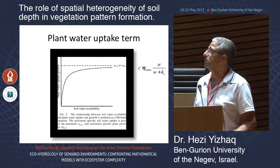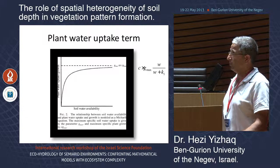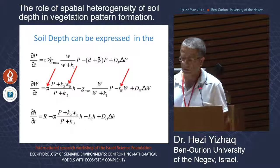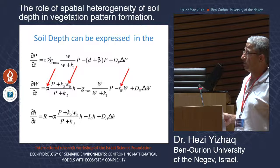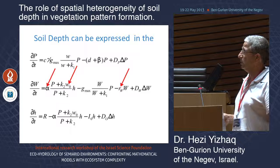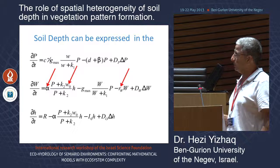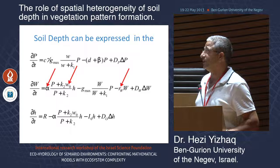The plant water uptake term reflects soil water availability and saturates where there is more soil water. Soil depth can be expressed in the model through several parameters: alpha and W0, which model the infiltration term, and also through Rw, the evaporation term. If Rw is high, then the loss to evaporation and drainage is high. We chose to take this term into account.